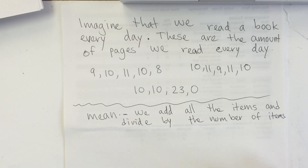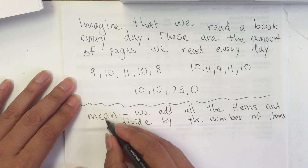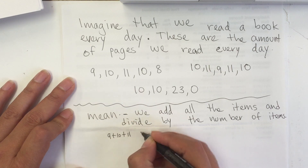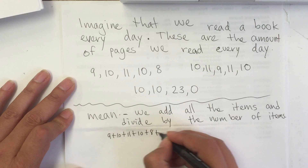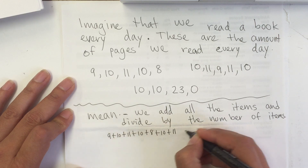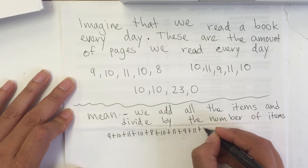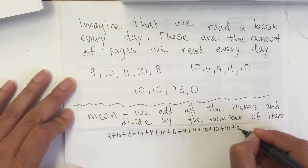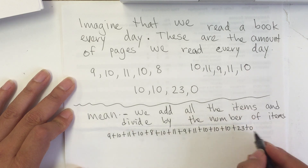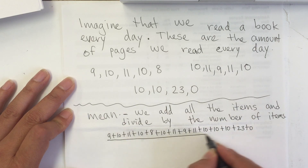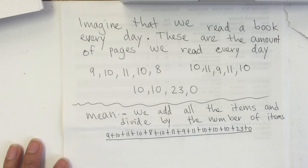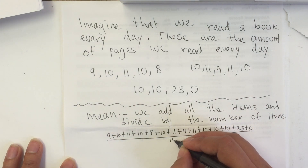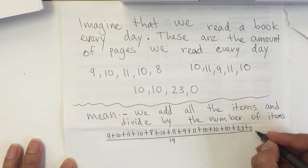So divide by 14. To find the mean, I'm going to add 9 plus 10 plus 11 plus 10 plus 10 plus 10 plus 10 plus 23 plus 0. We need to include that because that counts as one of the days — the day that I didn't feel well and that's why I didn't read. And then divide by the 14 days. Notice that we include that one day.